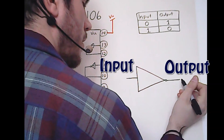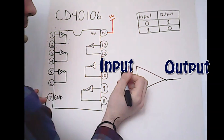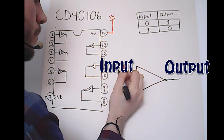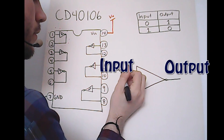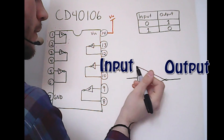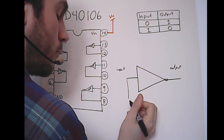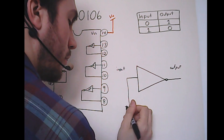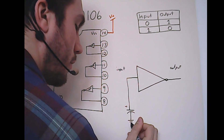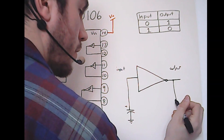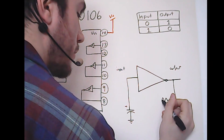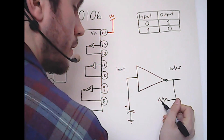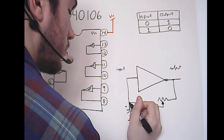There's an input and an output — pretty simple! With just two components we can make this inverter oscillate. Put a capacitor from input to ground, and a variable resistor from output to input, which is our feedback resistor.